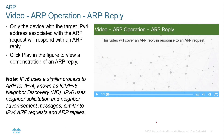Only the device with the target IPv4 address will respond with the appropriate MAC address. Remember, IPv6 uses a similar process, but instead of ARP it uses Neighbor Discovery — specifically neighbor solicitation and neighbor acknowledgement messages. IPv6 does not use ARP; it only uses Neighbor Discovery.